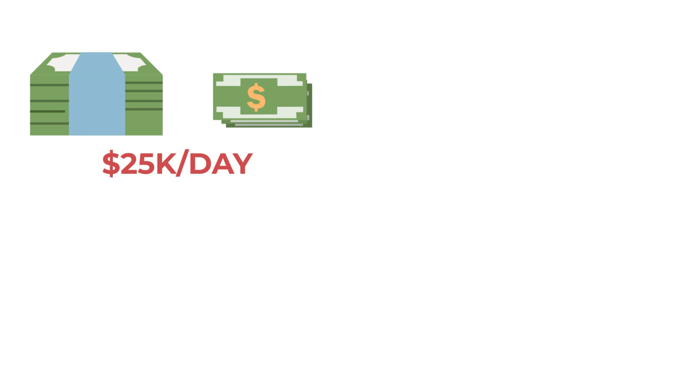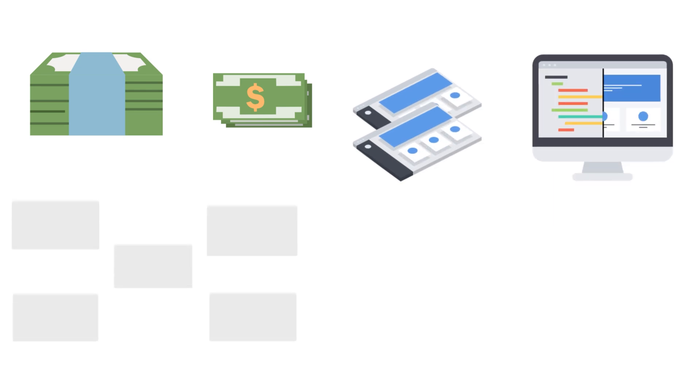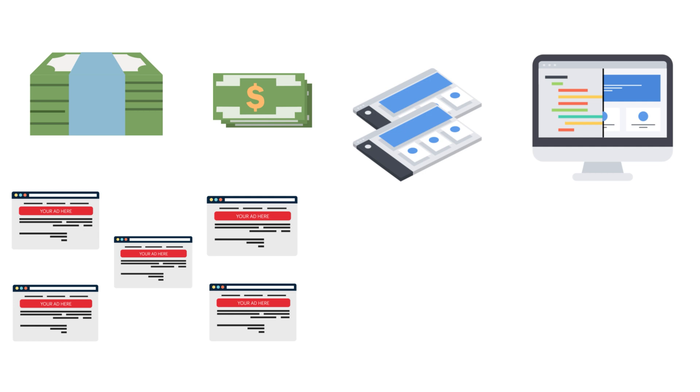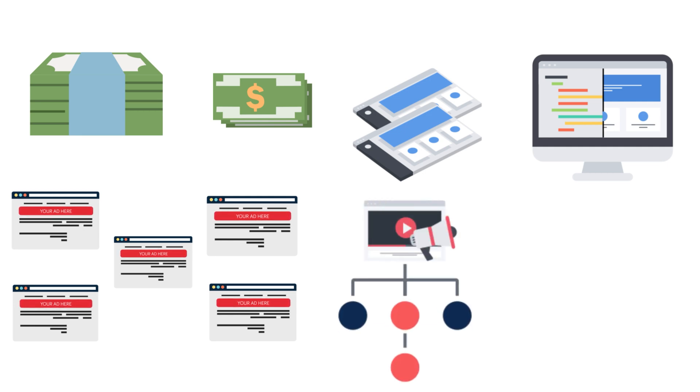This client was already converting well on other traffic sources like Facebook, and wanted to spend over a thousand dollars a day, with a goal of $25k a day very soon. We started at $1,000 a day. They had five creatives per offer across two different landing pages. We launched multiple campaigns — specifically 20 campaigns at $50 per day per campaign, so each offer had 10 campaigns.